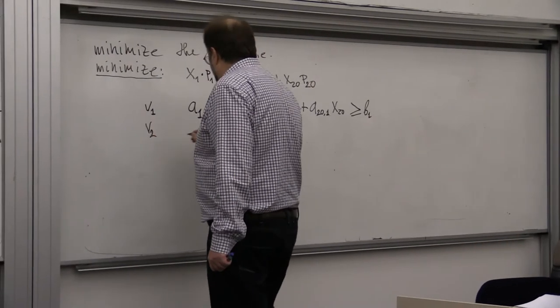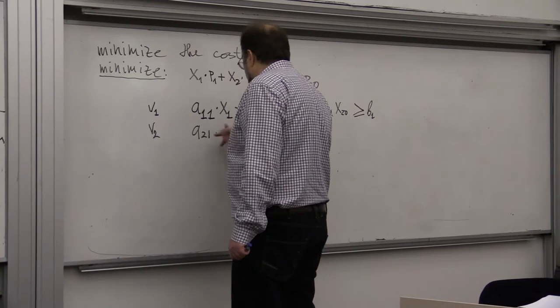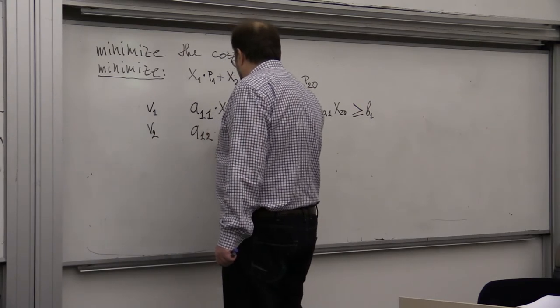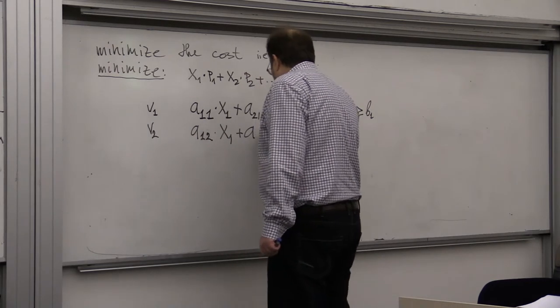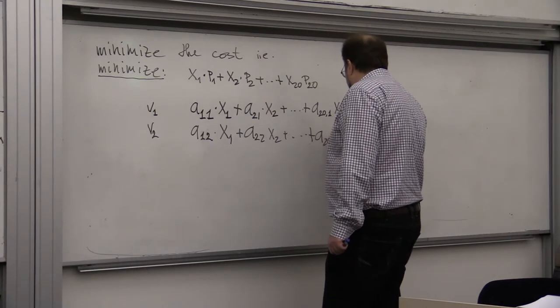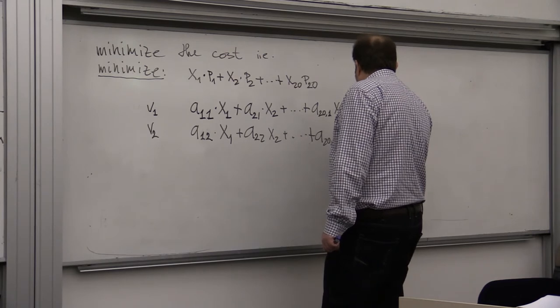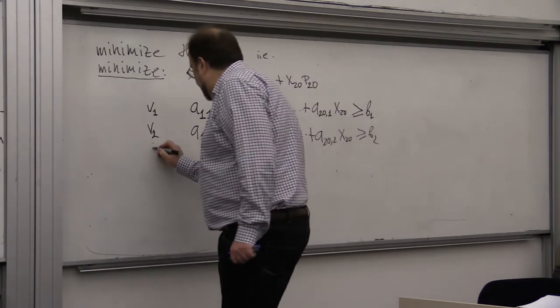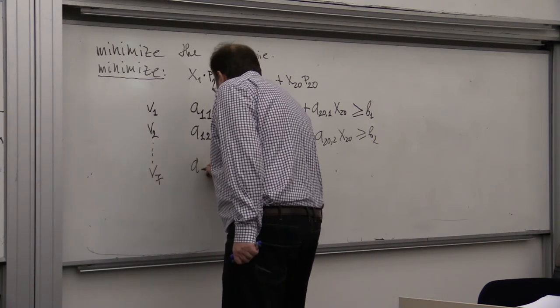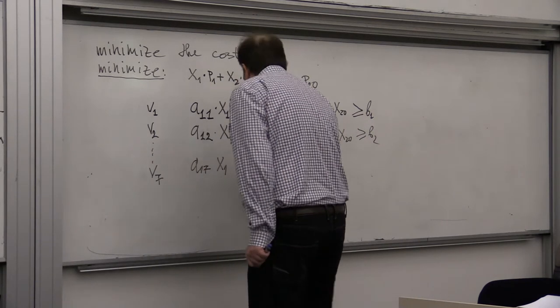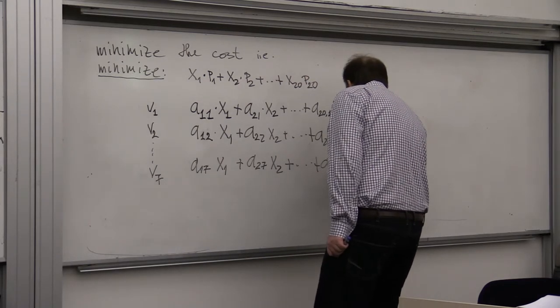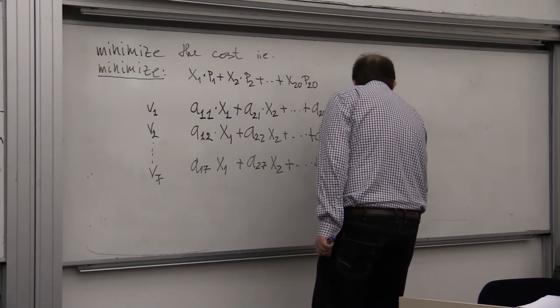And similarly for vitamin 2, the content will be A12 times X1 plus A22 X2 plus and so forth, A20,2 times X20 should be bigger or equal than B2, and so forth for all of the vitamins. V7 at the end is A1,7 times X1 plus A2,7 times X2 plus A20,7 X20 should be bigger or equal than B7.